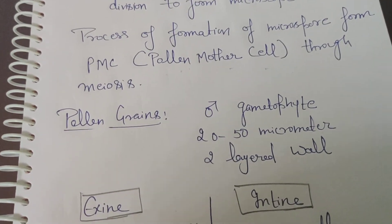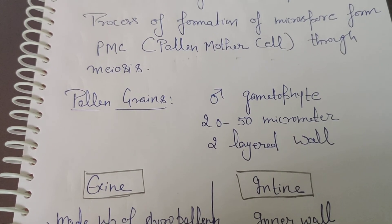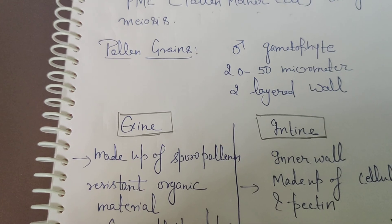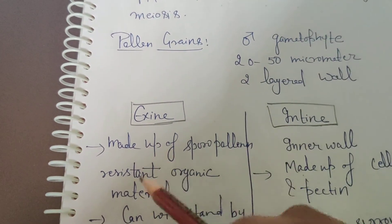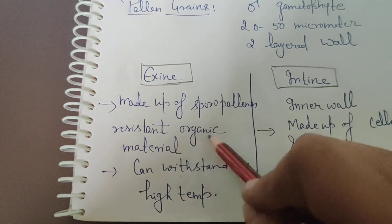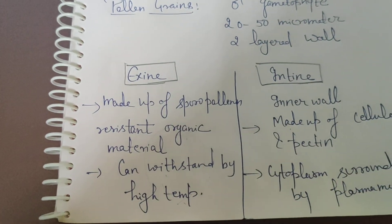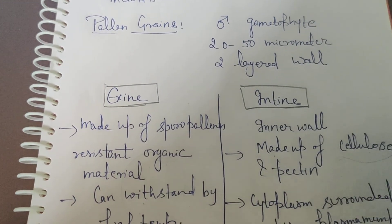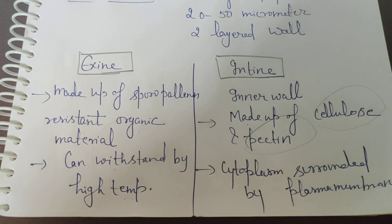Now the next part is the pollen grain. The pollen grain is the male gametophyte. Its size is 22 to 50 micrometers. It has two layers: exine and intine. Exine is the outer layer, made of sporopollenin, and is highly resistant to organic material — it can withstand high temperatures and does not get damaged easily. The intine is the inner wall and is made up of cellulose and pectin. The cytoplasm is surrounded by the plasma membrane.